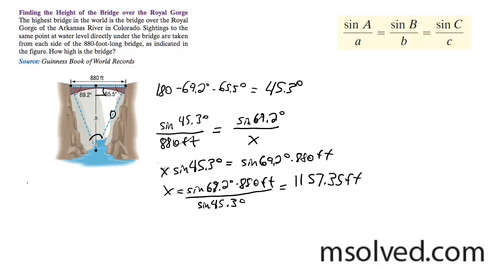So what I'm going to do next is I can take the sine of 65.5. I don't know what that height is, we're going to find it. And then the sine of 90 over 1157.35 feet.